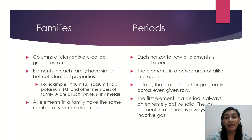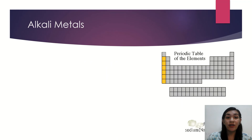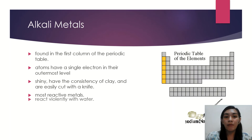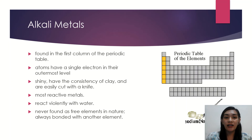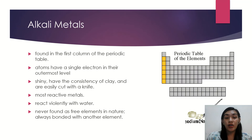Now, let's go to the different families. First, we have Group 1, or the alkali metals. These are found in the first column of the periodic table and they have a single electron in their outermost level. They are shiny, have the consistency of clay, and are easily cut with a knife. They are the most reactive metals in the periodic table and they react violently with water. They are never found as a free element in nature and are always bonded with another element.